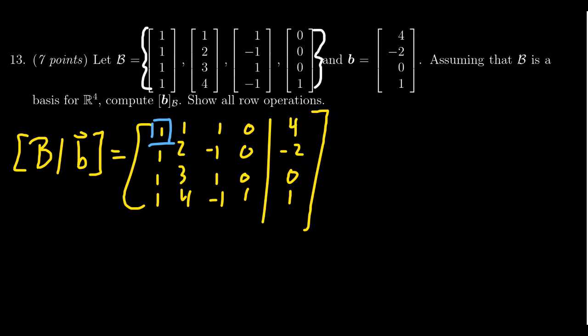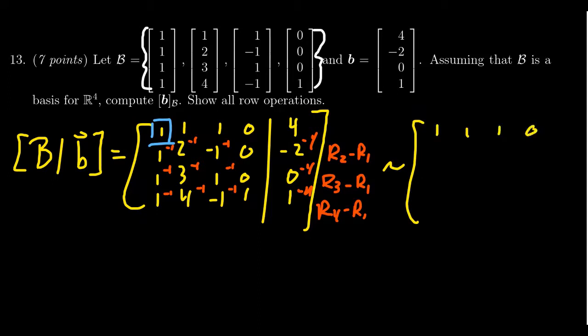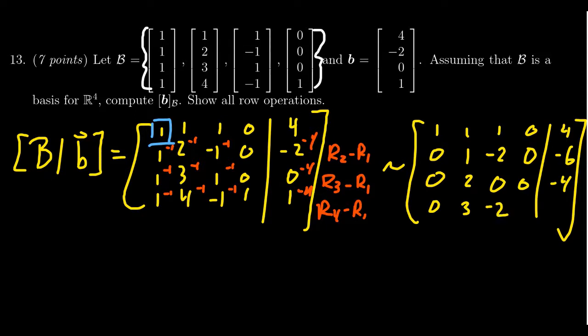Look at the first pivot position. We need to get rid of all the ones below it. So we're going to take row 2 minus row 1, row 3 minus row 1, and row 4 minus row 1. So we get -1, -1, -1 for the zeros, and -4 in each case. The next matrix in this process, the first row stays the same. All the other rows change. We're going to get [0,1,-2,0|-6], third row becomes [0,2,0,0|-4], and then the fourth row becomes [0,3,-2,1|-3].